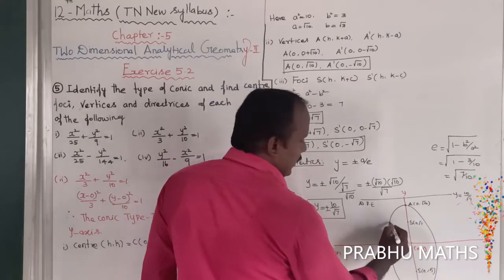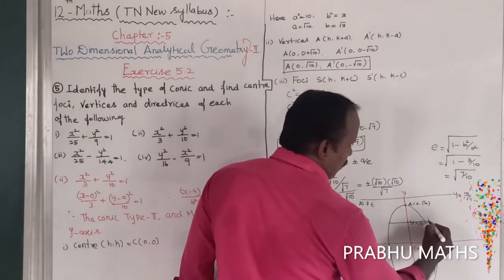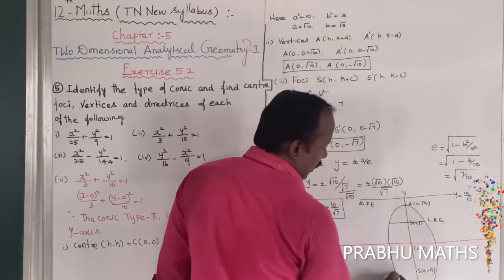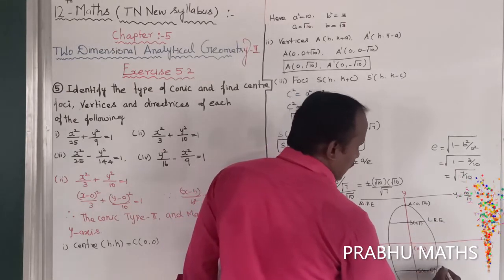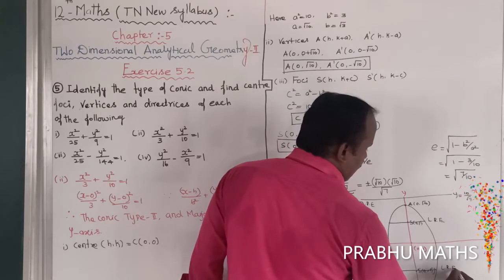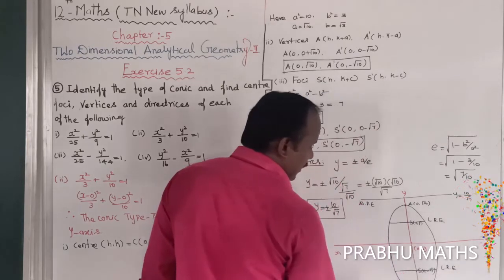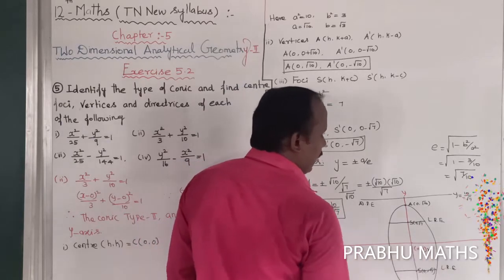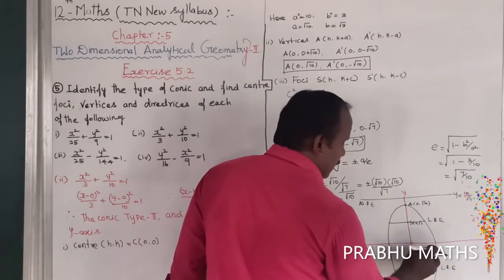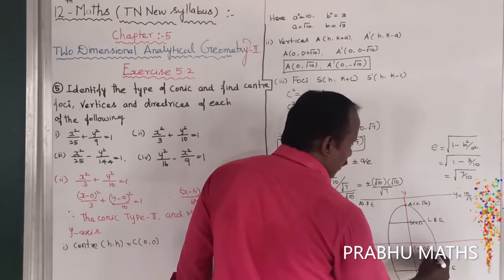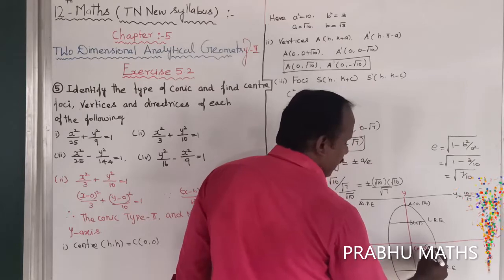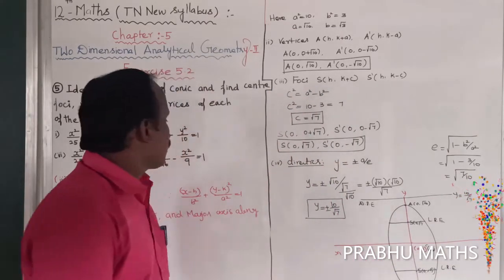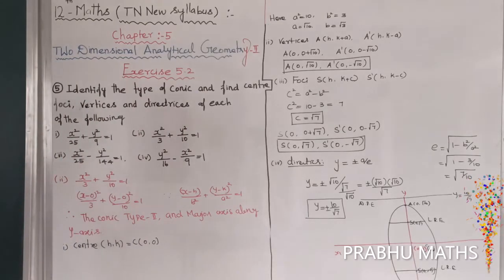Next is the latus rectum equation and the directrix equation. The center C is (0, 0). That completes the second subdivision. Next is going to the third subdivision.